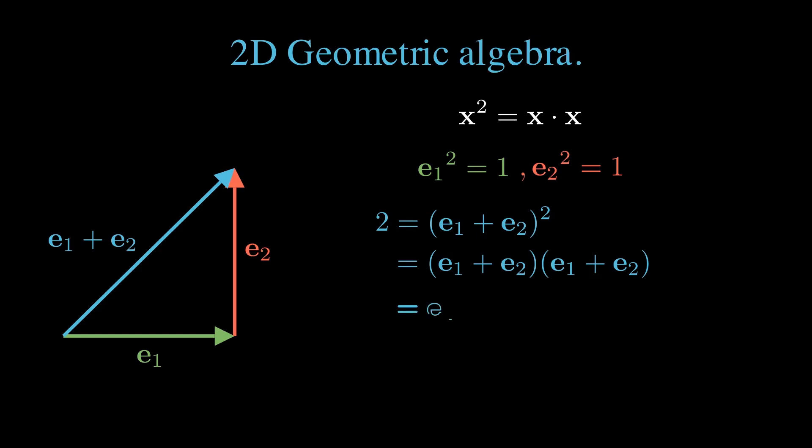We have E1 squared plus E2 squared plus each of the inner products E1 E2 and E2 E1. That gives us 2 plus E1 E2 plus E2 E1.